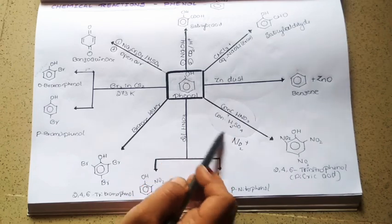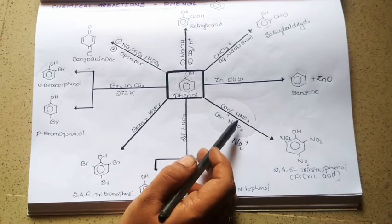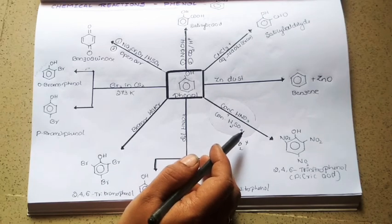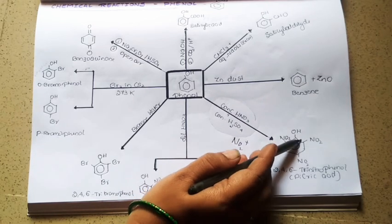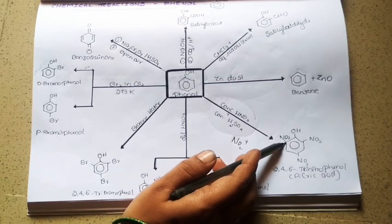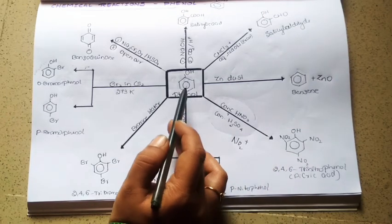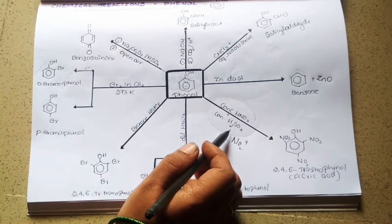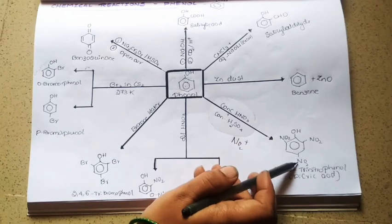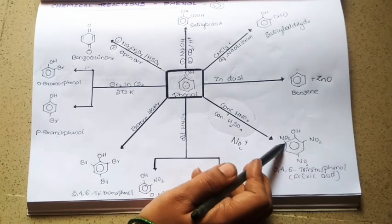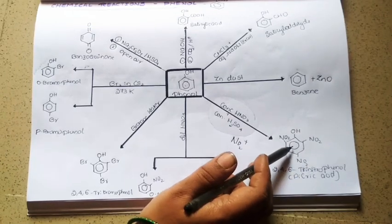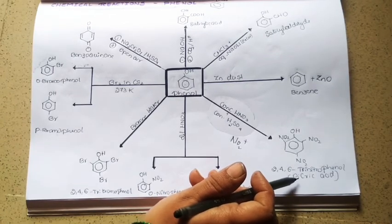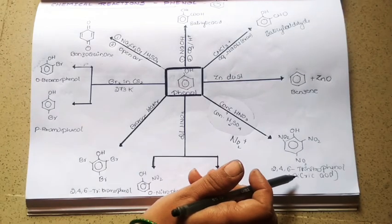Since we are using nitrating mixture with concentrated nitric acid and sulfuric acid, substitution takes place at the ortho and para positions. So whenever phenol is treated with a mixture of nitric acid and sulfuric acid, we get a tri-substituted product — that is 2,4,6-trinitrophenol, called picric acid, which is used to prepare some explosives.